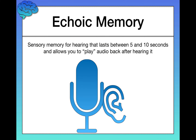Next we have echoic memory. Think echo. Echoic memory is sensory memory for hearing that lasts between five and ten seconds — a slightly longer duration than iconic memory. It allows you to play audio back after hearing it. Echoic memory is really useful; for example, it lets you take notes on what I'm saying. Even though I've moved on to the next sentence before you've finished writing, your echoic memory lets you play back a little audio clip of what you just heard.